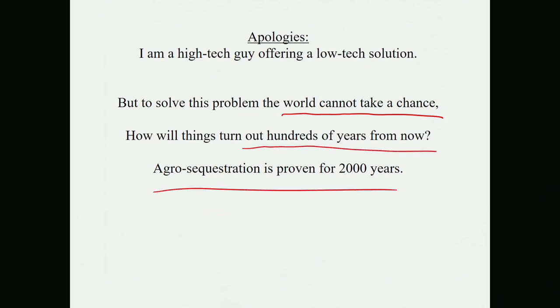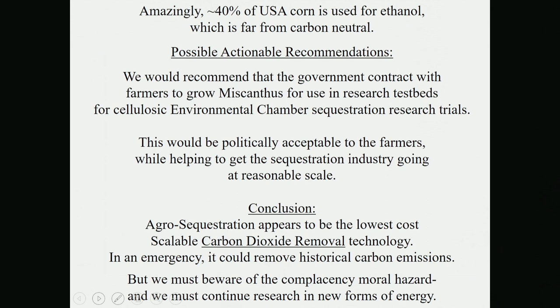I have to offer apologies — I'm a high-tech guy offering a low-tech solution. The reason this is correct is that the world cannot take a chance on weird ideas, and this is one of the simplest, most straightforward things. We can't predict what will happen hundreds of years from now, but this has been proven for 2,000 years. Regarding land: in Europe they're very concerned about converting agricultural land for biofuel uses, and it's actually illegal there. But in the United States, 40% of U.S. corn is already going into ethanol. They could be growing Miscanthus instead, which would be far more efficient.